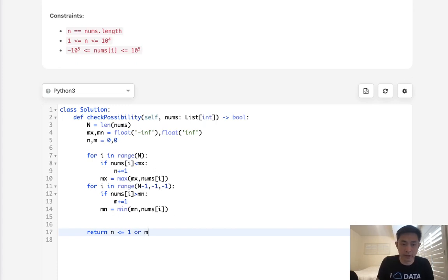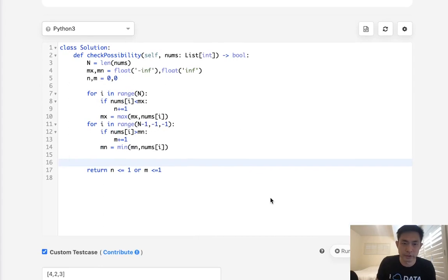Now, all we need to do here is say m is also less than or equal to 1. So if any of these is false, then we have to return false, right? Okay, so let's make sure that this is working.